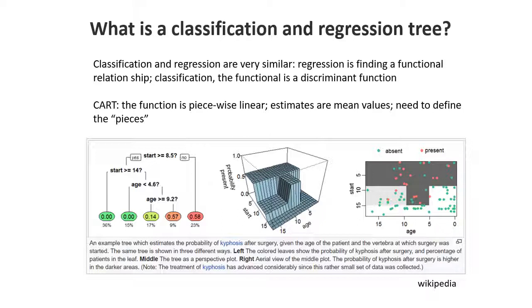CART basically says we can divide up the space of our X variables into pieces, and then model the Y variable as piecewise linear and discontinuous. For example, with two variables — say, start and age — we have presence or absence of disease. How would you model that with a regression model? The CART approach cuts up the space into little pieces and models, for each piece, the probability as the average of the points within that region.